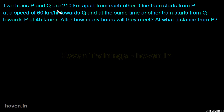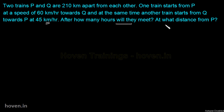Two trains P and Q are 210 km apart from each other. One train starts from P at a speed of 60 km per hour towards Q, and at the same time another train starts from Q towards P at 45 km per hour. After how many hours will they meet and at what distance from P?